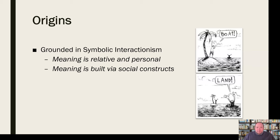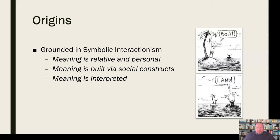Meaning is also built via social constructs. We are influenced by the world around us — especially as adolescents, but really throughout our lives — by where we are, who we are, who we're with, the things we've learned and experienced, and what our culture and society expect of us. Meaning is built and influenced heavily by these social constructs. And in the end, because meaning is relative and personal, meaning is interpreted — each person assigns meaning to a particular event or symbol individually; we make meaning out of these things ourselves.